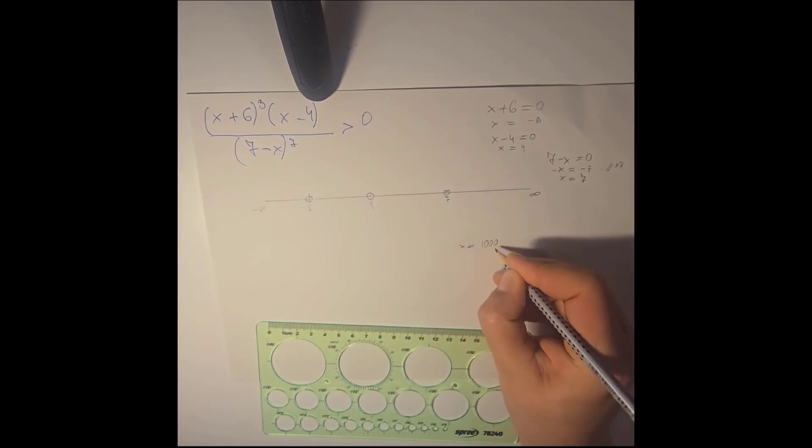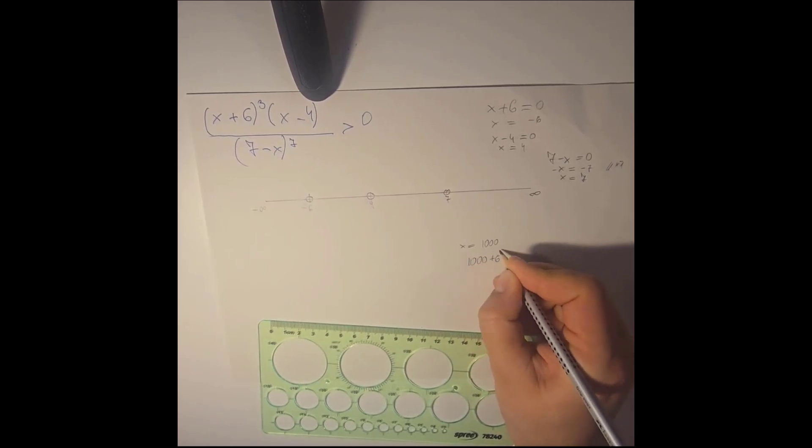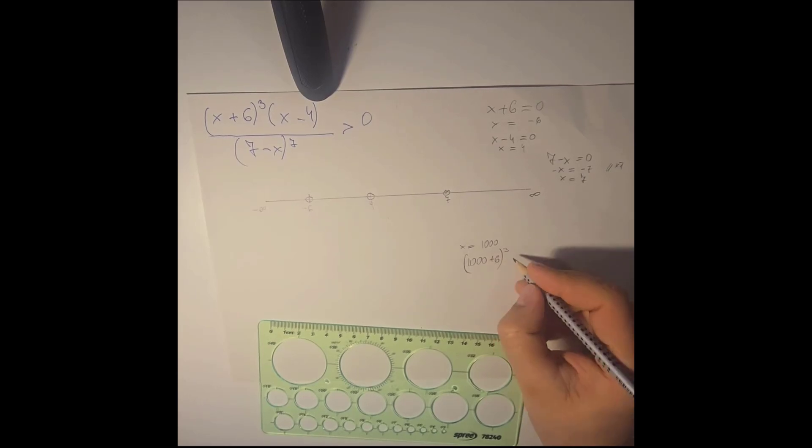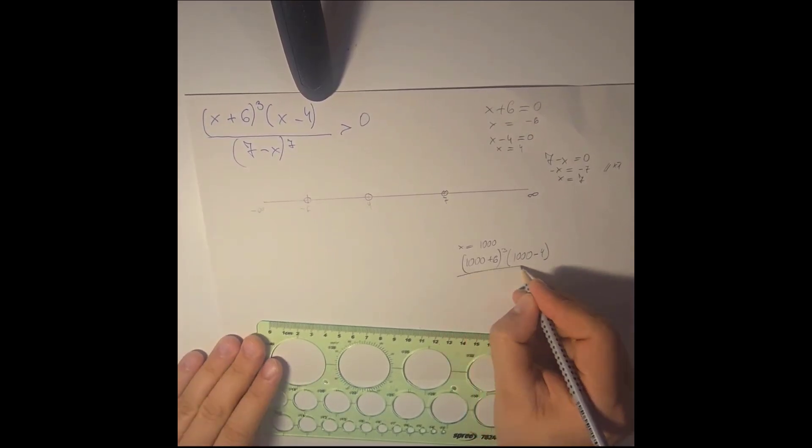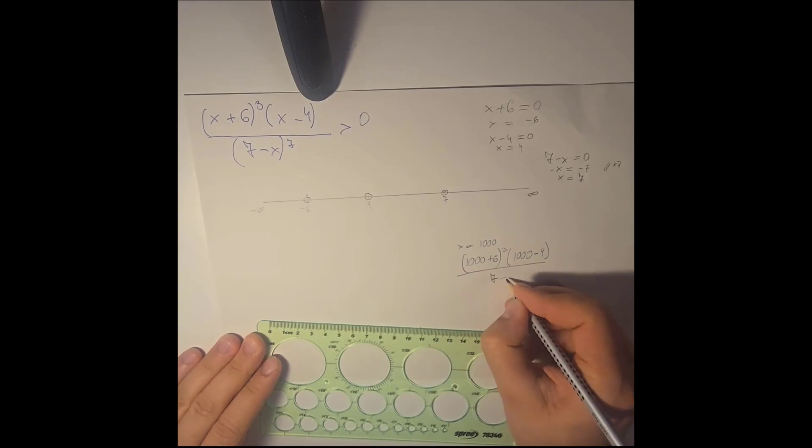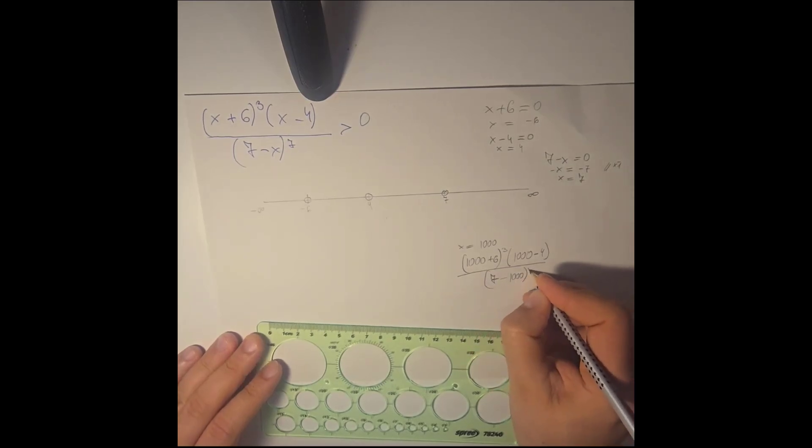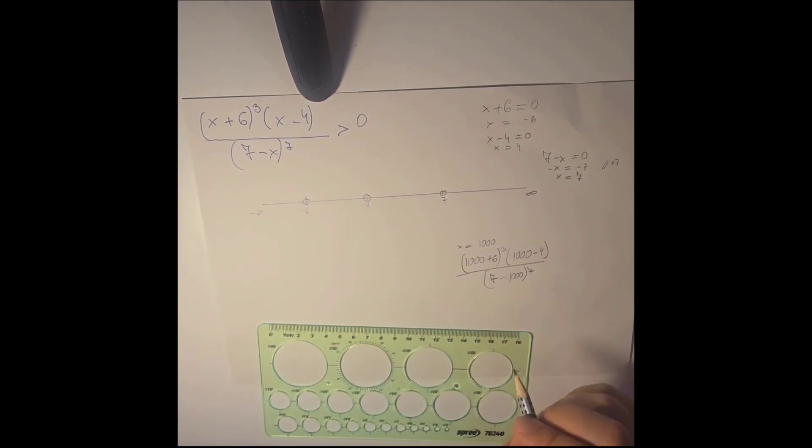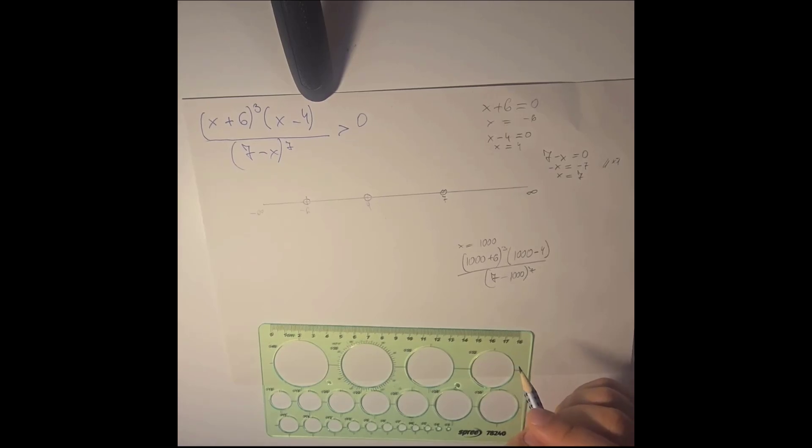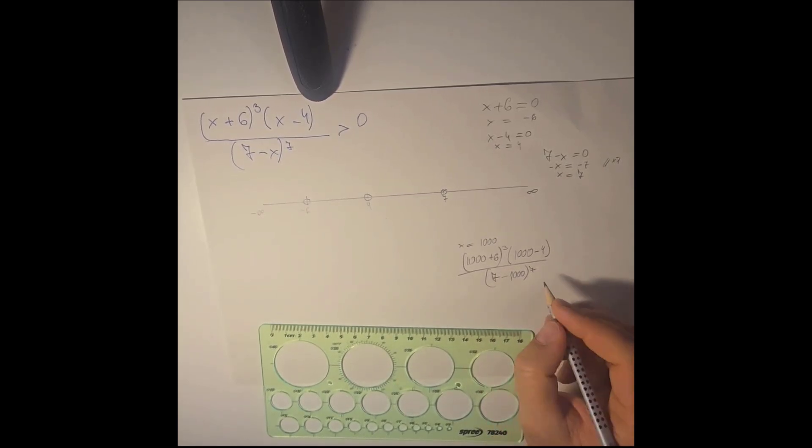So we solve for x equals a thousand. So we have 1,000 plus 6 to the power of 3, then 1,000 minus 4 and then 7 minus 1,000 to the power of 7.